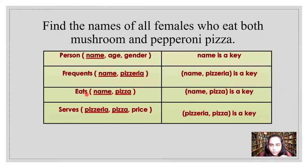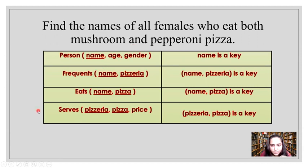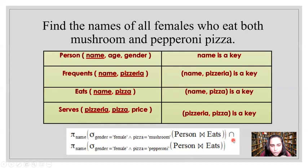The next question says: find the names of all females who eat both mushroom and pepperoni pizza. This is similar to the previous query, but now the person must eat mushroom as well as pepperoni pizza. For example, if there is a person named Mary, there should be two entries in the eats table — Mary eats mushroom pizza and Mary eats pepperoni pizza — and only then would Mary's name be selected. Simply changing OR to AND in the previous query would not work correctly.